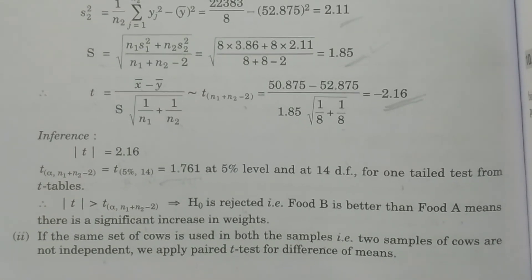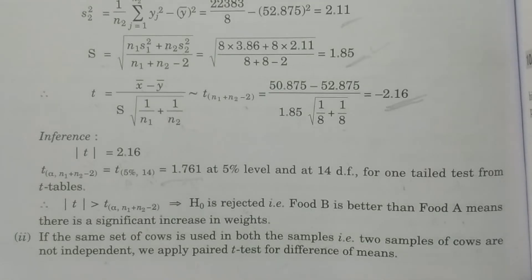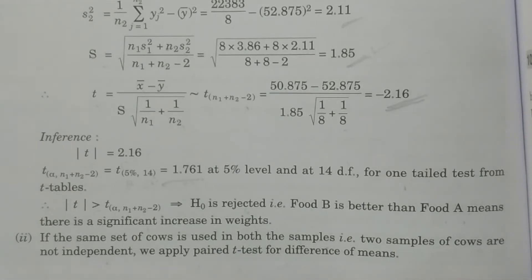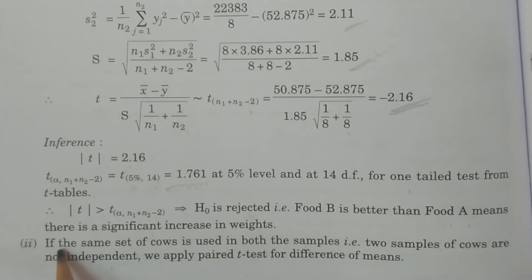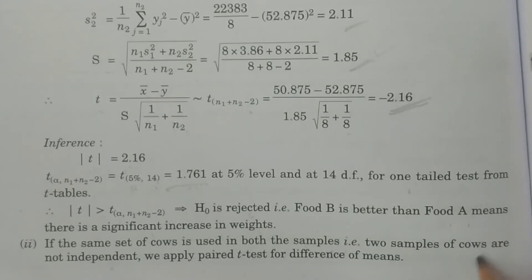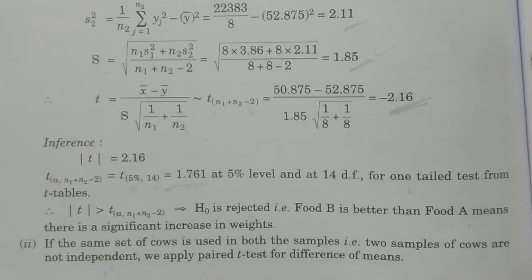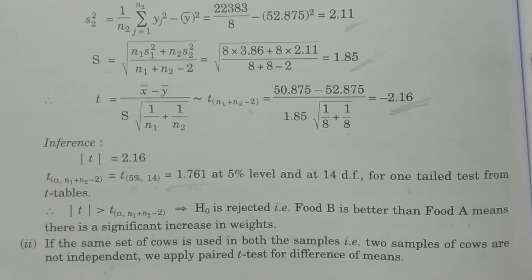This completes the first problem: T-test for difference of means where samples are independent. Now for the second problem: samples are not independent but dependent, because the same set of eight cows is used in both foods A and B. For this dependent case, we apply the paired T-test for difference of means.